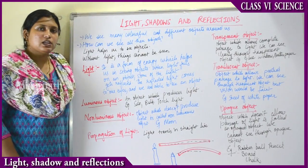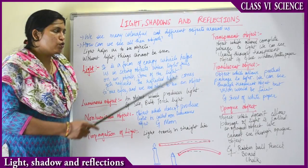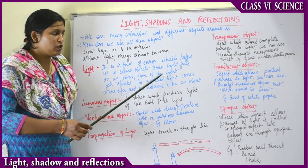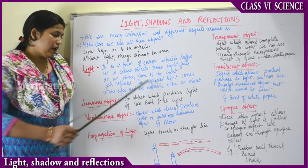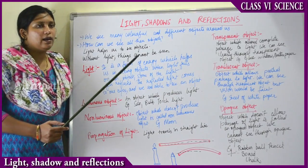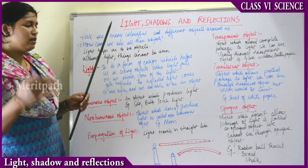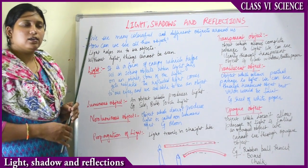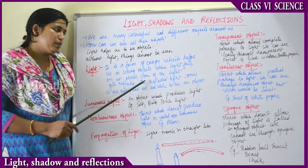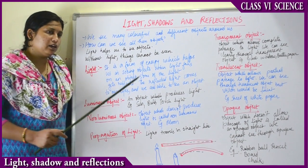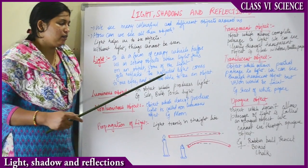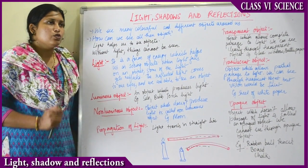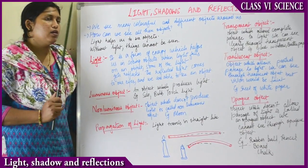When light falls on an object, some of the light gets reflected. Light falls on an object, gets reflected into our eyes, and that is how we are able to see it. When light falls on an object and goes back, it is called reflection. The reflected light comes to our eyes, and that is how we see objects.